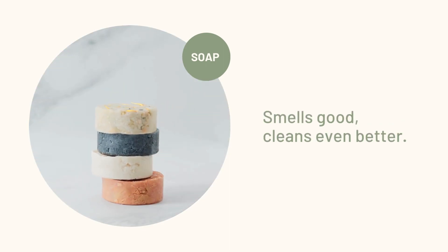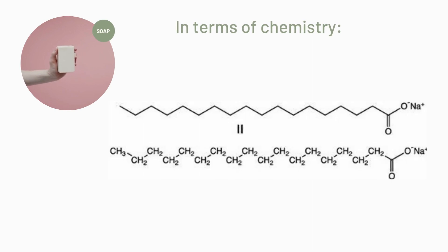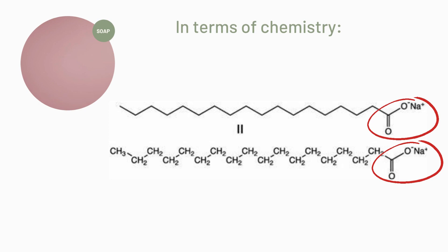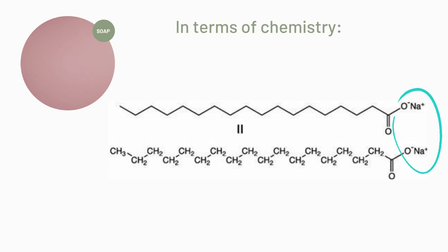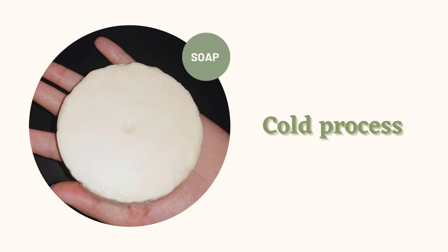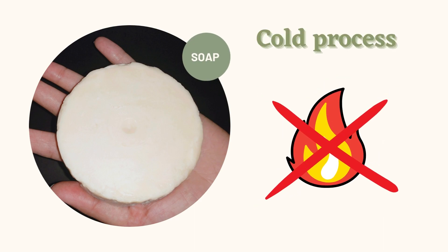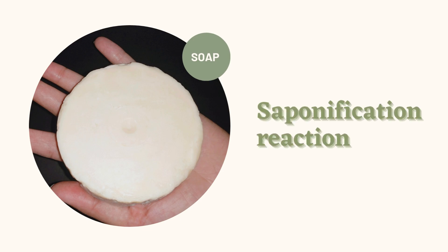In terms of chemistry, soaps are classified as a salt of fatty acids because of the presence of an ionic or polar head and a non-polar glyceride tail. The head is composed of a positively charged sodium ion and a negatively charged oxygen ion, while the tail is a fatty chain. I'm using the cold process for making soap, and in this process ingredients are not heated, which allows them to conserve their beneficial and natural properties. This is also called a saponification reaction.